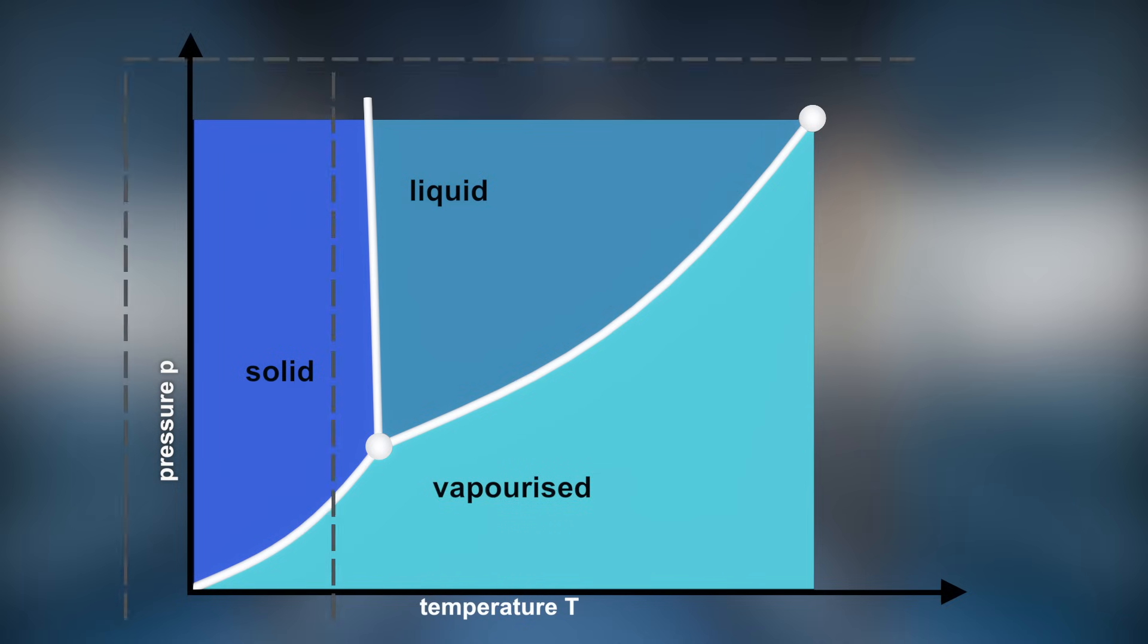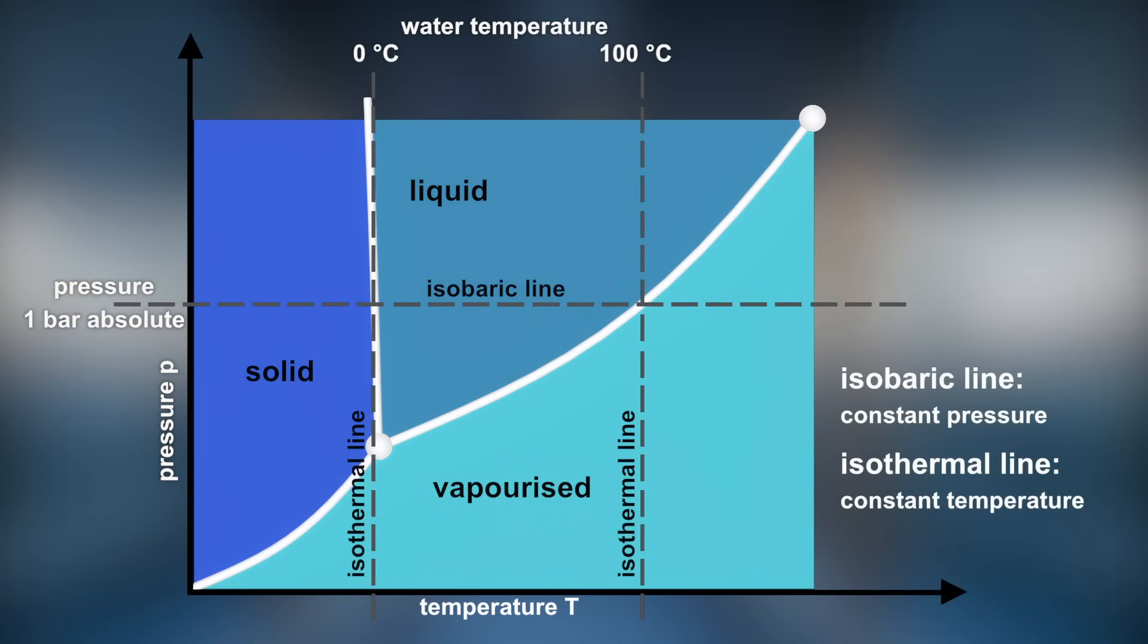At a constant pressure of 1 bar absolute, water in its solid state, which is ice, melts to liquid water at a temperature of 0 degrees Celsius. Keeping the pressure constant at 1 bar absolute, liquid water evaporates when the temperature is increased above 100 degrees Celsius.